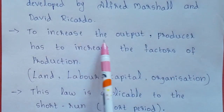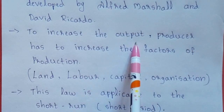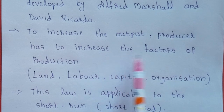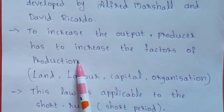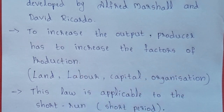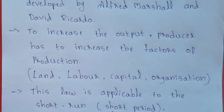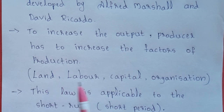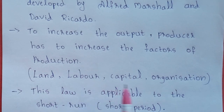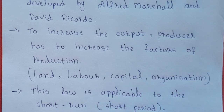To increase the output, a producer has to increase the factors of production. Factors of production means land, labour, capital and organization.